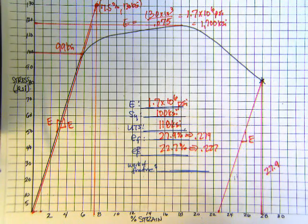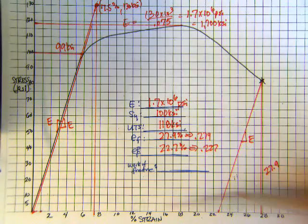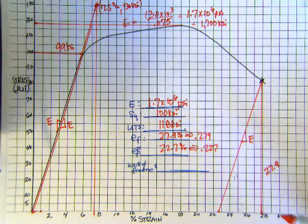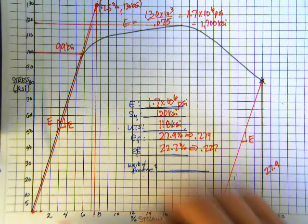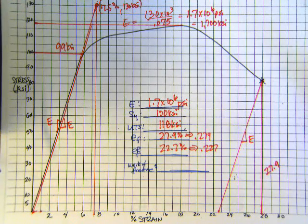The last one is the work of fracture. Now the work of fracture can be directly determined by counting the squares. If you have your data in a spreadsheet, it's pretty easy to do a numerical integration.